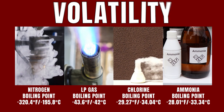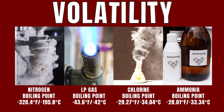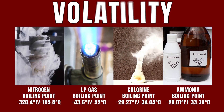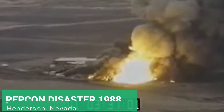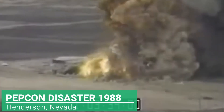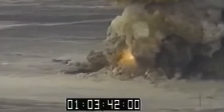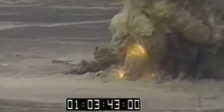Examples of highly volatile substances include nitrogen, liquid petroleum gas, chlorine, and ammonia. Some tanks containing flammable materials can BLEVE — meaning they can heat up under pressure and rupture, causing violent explosions.